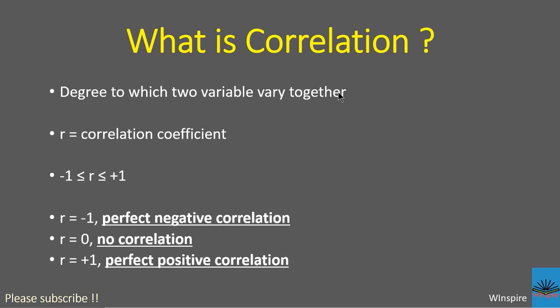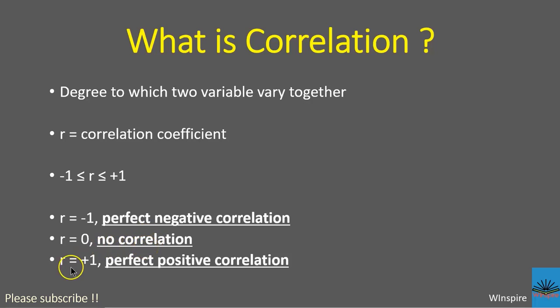If height increases and weight also increases, they might be positively correlated. If height increases and weight decreases, they might be negatively correlated. Correlation is always measured as r, called the correlation coefficient. R is always between -1 and +1. Minus one means perfect negative correlation, zero means no correlation, and plus one means perfect positive correlation. Any value above zero indicates some degree of positive correlation.